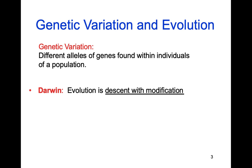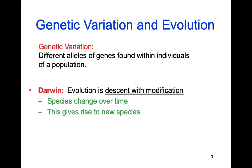Darwin is the one we associate with genetic variation and knowing how it is passed on from generation to generation, and we associate him with talking about evolution. His idea of evolution is what we refer to as descent with modification, which literally just means that species change over time. This generation is a little bit different — it has some modifications that the last generation didn't.